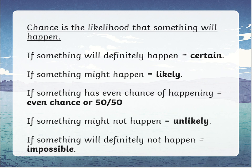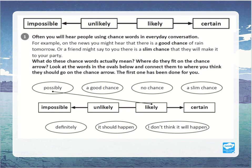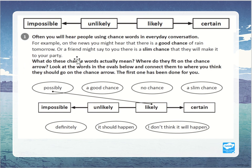And if something could definitely not happen, we call that impossible. On a scale, we've got: impossible, unlikely, even chance in the middle, likely, and then certain. Sometimes you'll hear these words in everyday conversation — for example, on the news you might hear 'there's a good chance of rain tomorrow,' or a friend might say 'there's a slim chance they might make it to your party.'